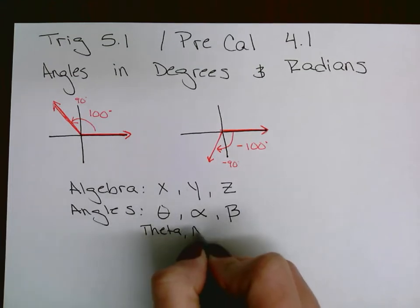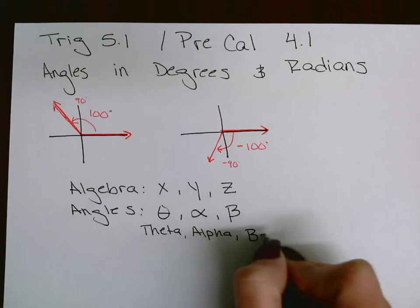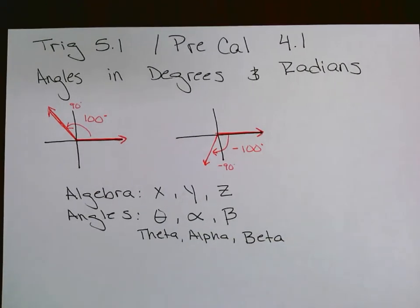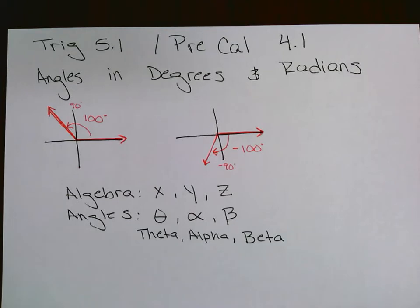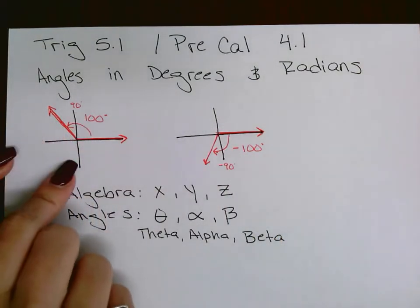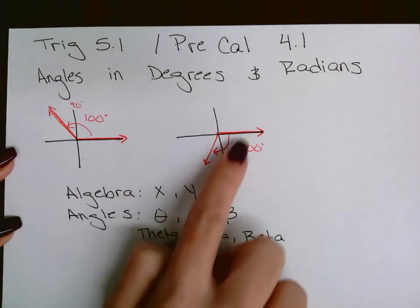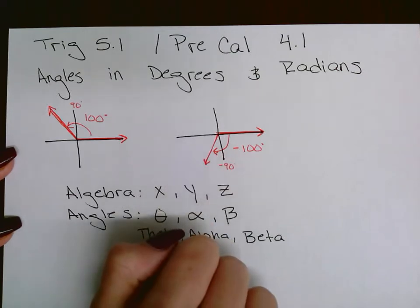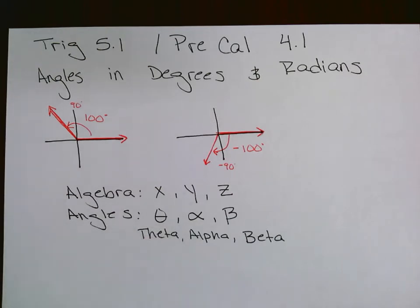Those symbols — theta, alpha, beta — are Greek alphabet letters. If you've been on a college trip and seen the sororities and fraternities, that's because they use the Greek alphabet. That's exactly where those symbols come from.